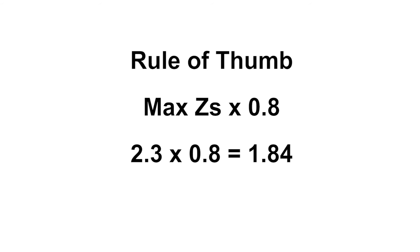For our purposes, if we multiply the maximum value from BS7671, which for a 20 amp type B device is 2.3 ohms, by 0.8, we end up with a value of 1.84. Our measured value must not be greater than that rule of thumb value.